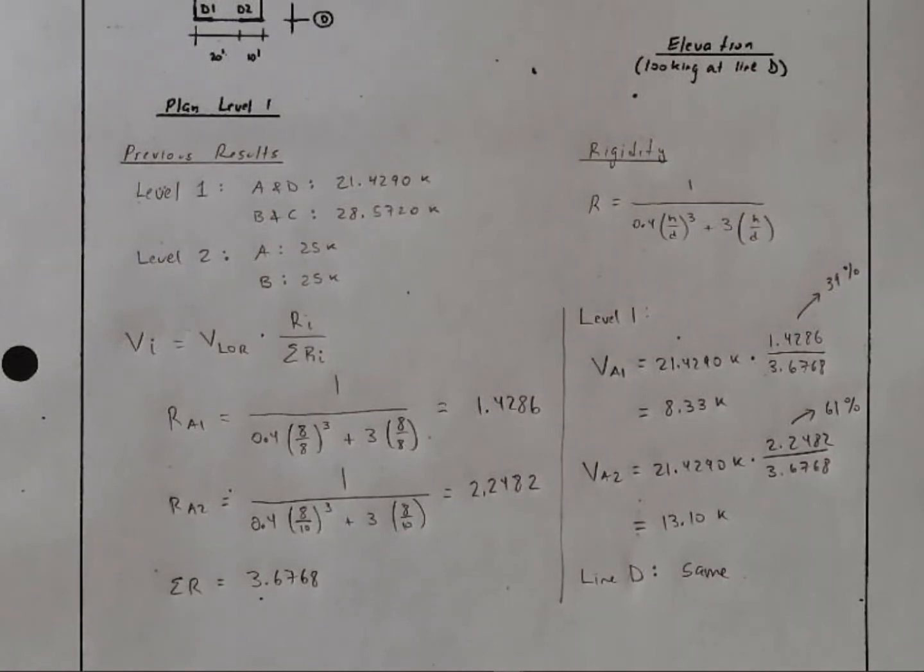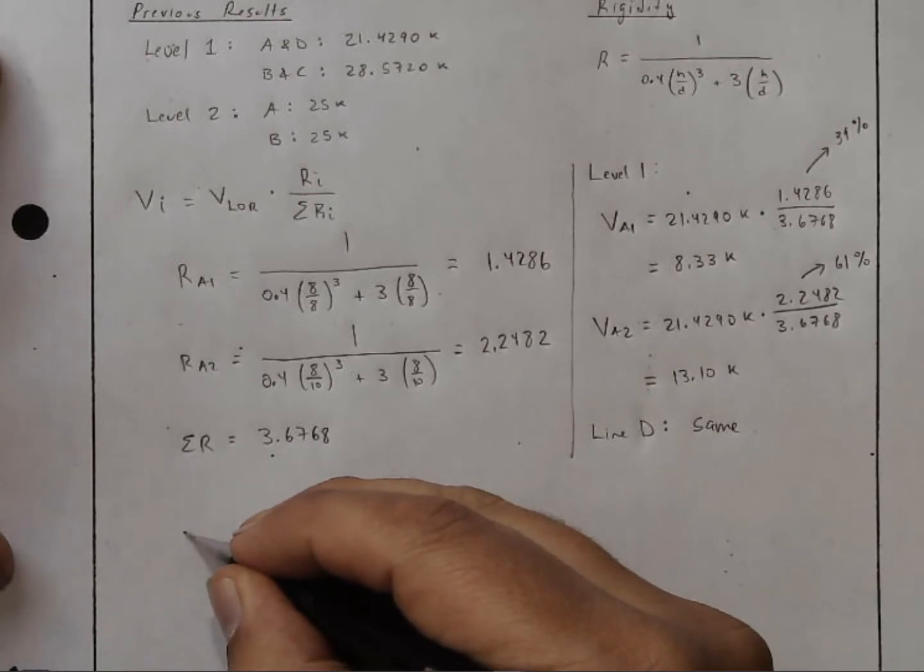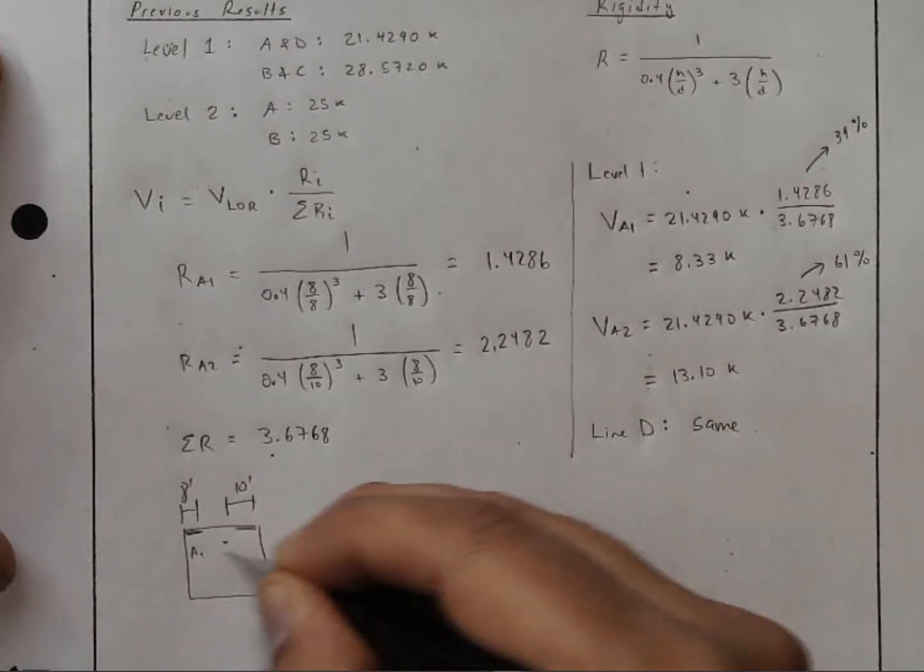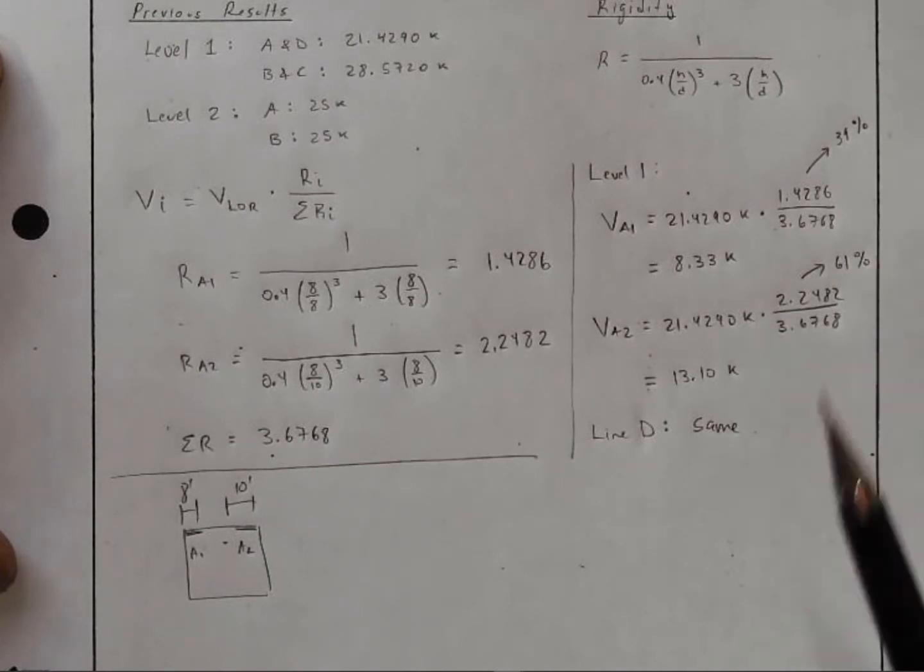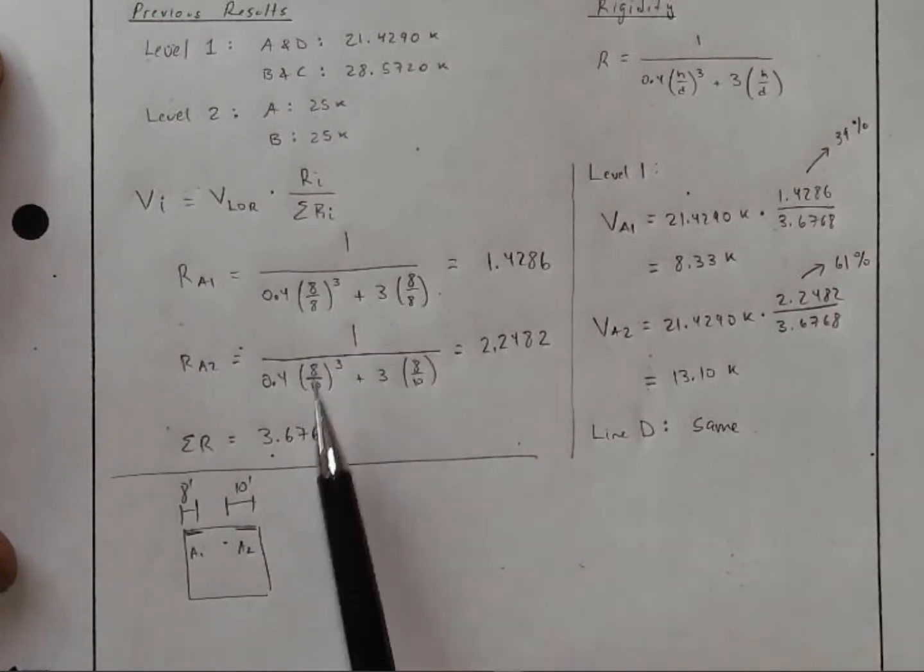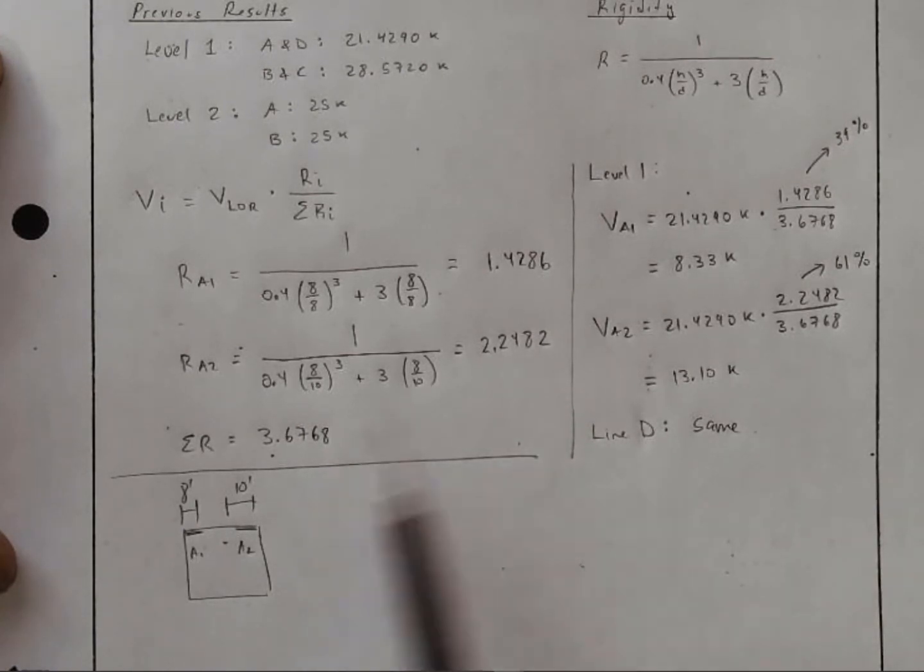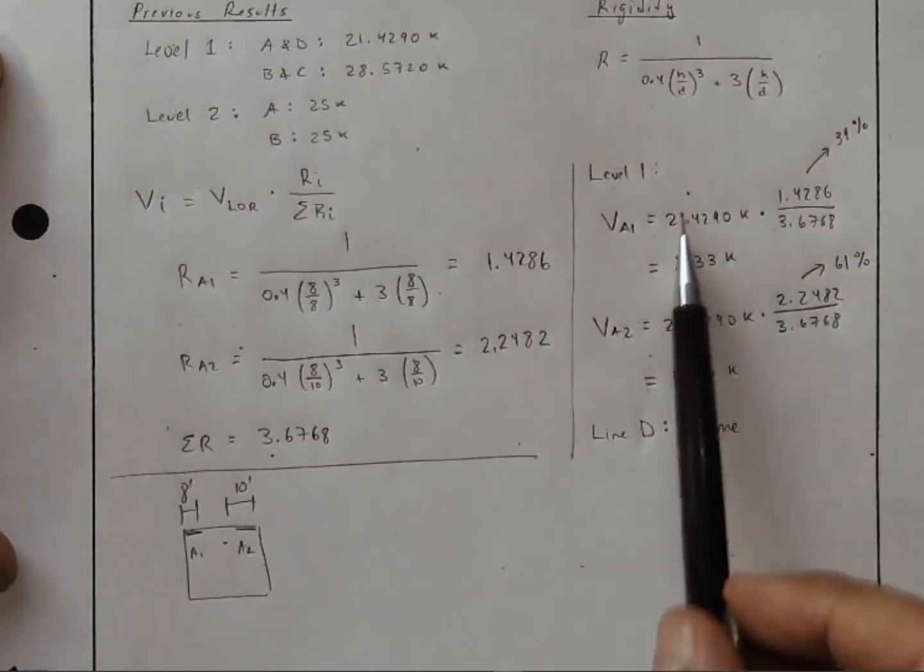All that we need to do now is to look at our top story. So I'll scoot up a little bit. I'll resketch level 2. We have the same configuration, 8 feet and 10 feet for A1 and for A2. And so if we look at the calculation that we previously did, this is the same because the rigidities are the same. We're still using 8 feet of length and 10 feet of length. So the relative rigidities are the same. The total rigidity is the same. This quotient is the same. The percentage is the same. What's going to change is this value right here.